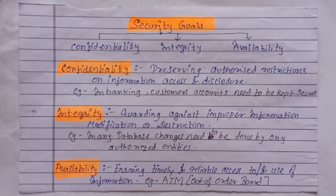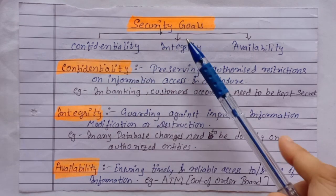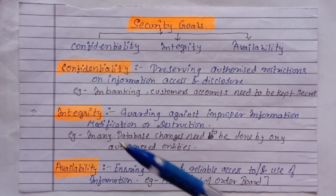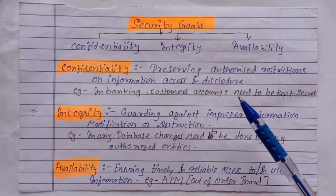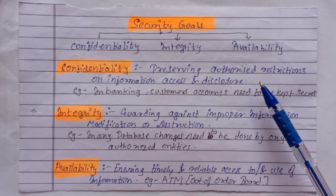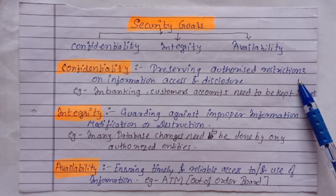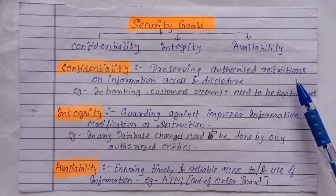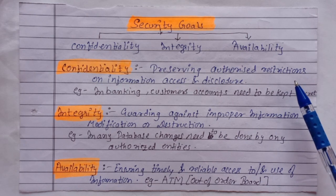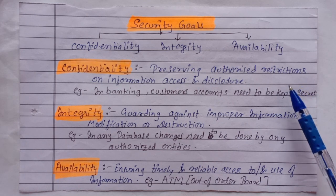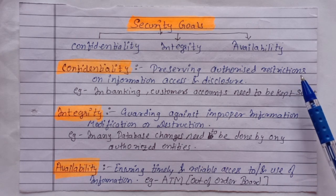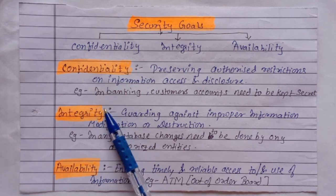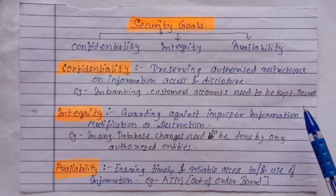Security goals. In cryptography there are 3 security goals: confidentiality, integrity, and availability. Confidentiality is preserving authorized restrictions on information access and disclosure. Confidentiality is the most common aspect of information security and we need to guard our information against malicious actions that endanger it. For example, in banking, customer accounts need to be kept secret.